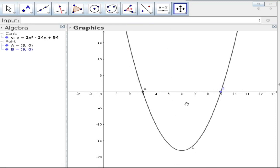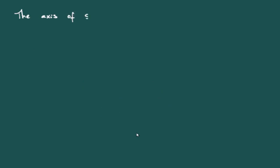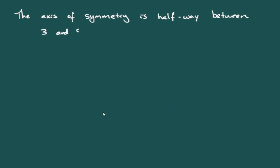The axis of symmetry should be halfway between the two x-intercepts. We take the average of the roots: x = (3 + 9) / 2 = 12 / 2 = 6. So the axis of symmetry is at x = 6.